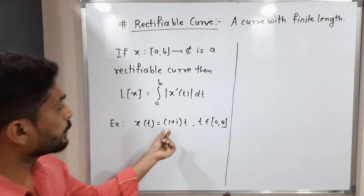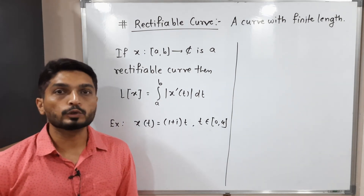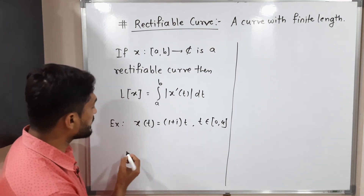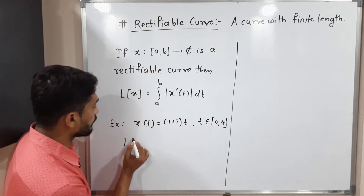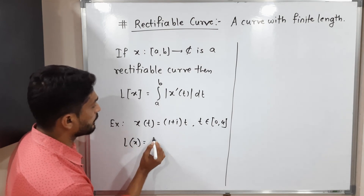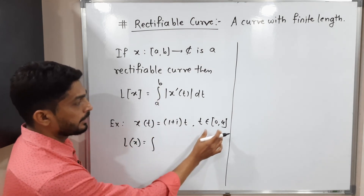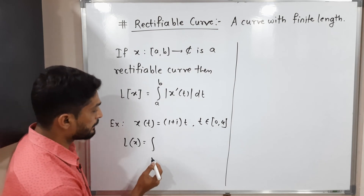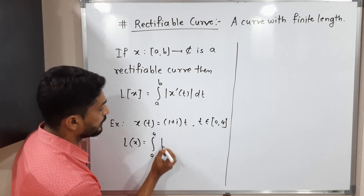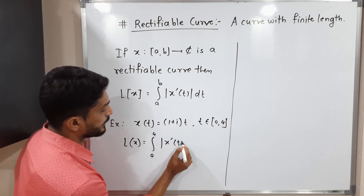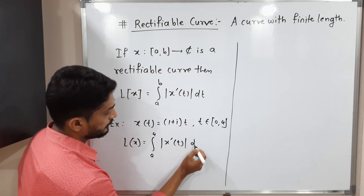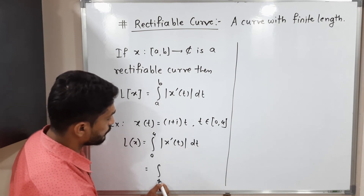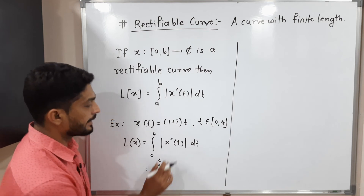Now let us discuss the second example. Here we have the curve x(t) = 1 + it, where t belongs to the closed interval [0, 4]. We have to find its length. Following the same definition: L(x) = ∫ from 0 to 4 of |x'(t)| dt.